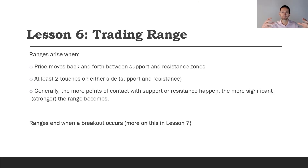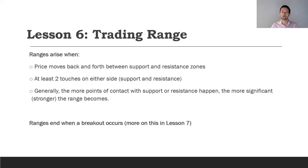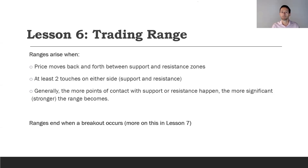The trading range is essentially a period of consolidation — the price has moved up and is now going sideways, because at these levels people have made money and are taking it off the table. New traders are buying in, and during that period a lot of coins are changing hands until the supply-demand balance is again disrupted, either up or down.